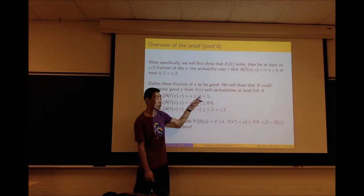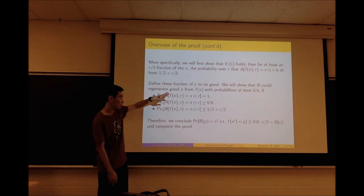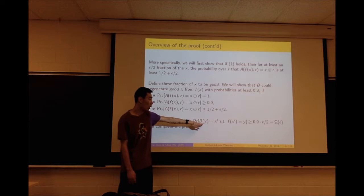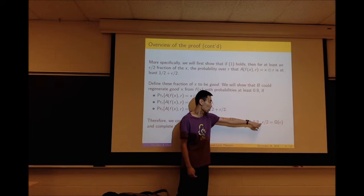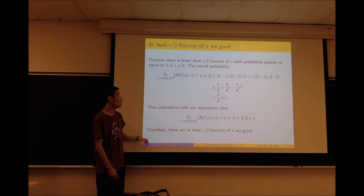The last condition is what we need to prove for the general case. We will start with stronger assumptions to get some intuition. If we can prove this, then the probability of B(y) outputting x′ such that f(x′) equals y will be greater than 0.9 times the fraction of good x, which is ε/2 — giving us a big-Omega result. We will complete the proof step by step.